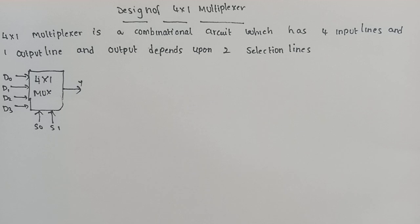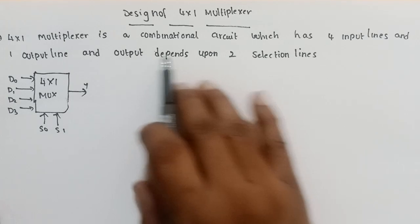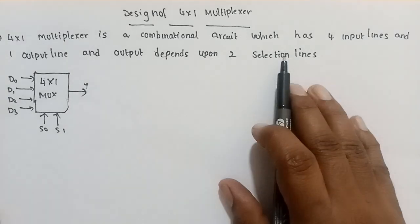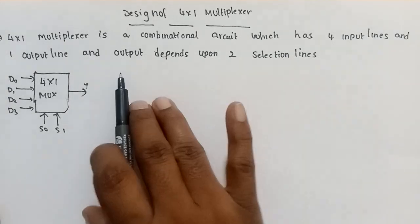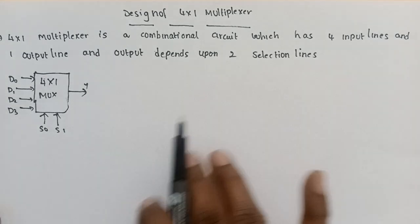In the previous video, I discussed the 2x1 multiplexer. A 2x1 multiplexer is a combinational circuit which has 2 inputs and 1 output, and that output depends upon the selection line. A 4x1 multiplexer is a combinational circuit which has 4 input lines and 1 output line, and the output depends upon the 2 selection lines.